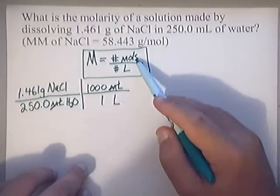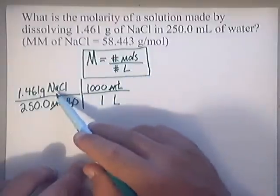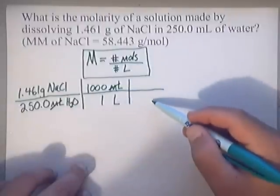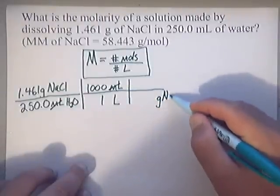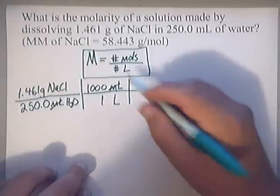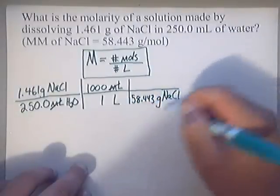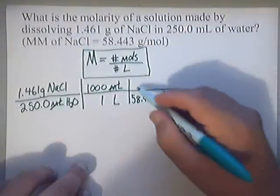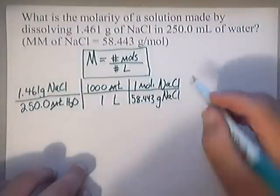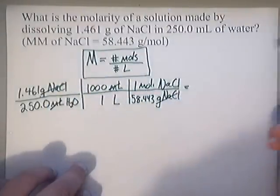Notice that molarity is moles over liters — I've got it halfway converted, so I now need to convert grams into moles. If this is grams on top, diagonally down here will be grams of NaCl. We need the molar mass, which is 58.443 grams of NaCl, and up on top of this will be 1 mole of NaCl. The grams of NaCl cancel, and you're left with moles of NaCl.